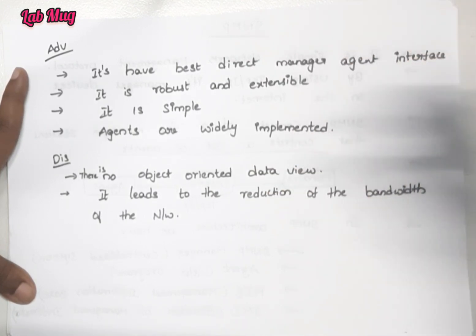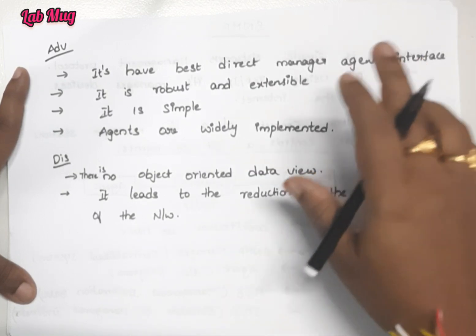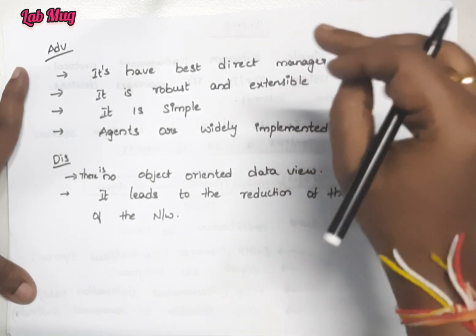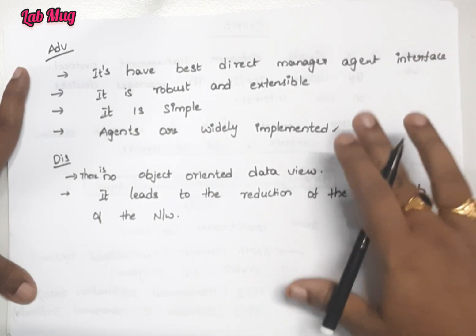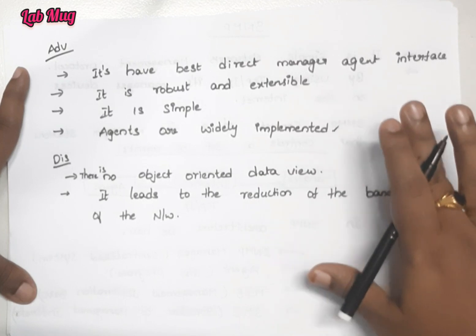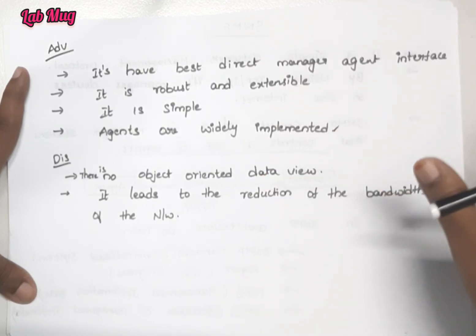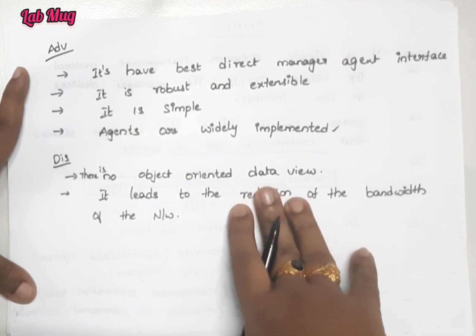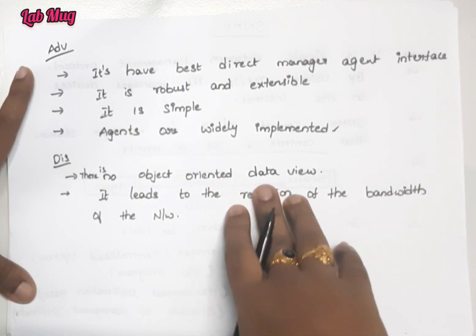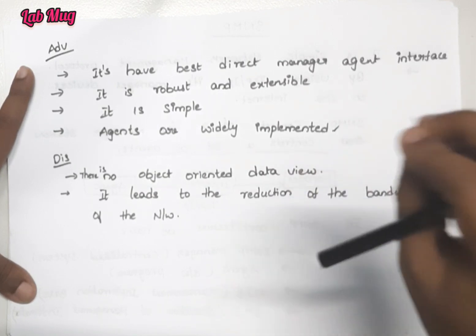The advantages of SNMP are: first, it is robust and extensible. Second, it is very simple and easy to implement and is widely implemented. Those are the advantages of SNMP. However, a disadvantage is that there is no object-oriented data view, so you cannot get an object-oriented view of the SNMP protocol.